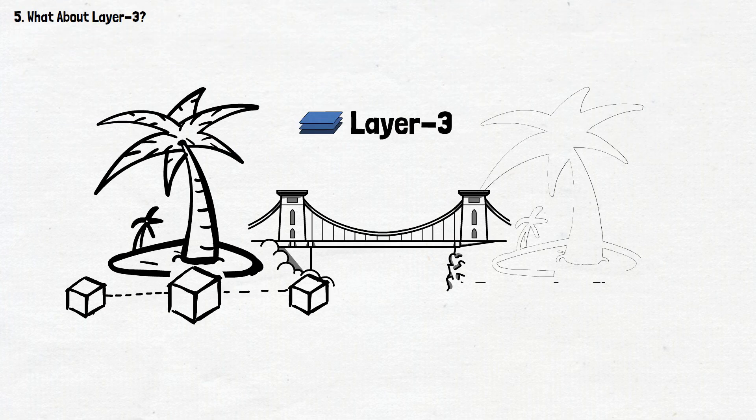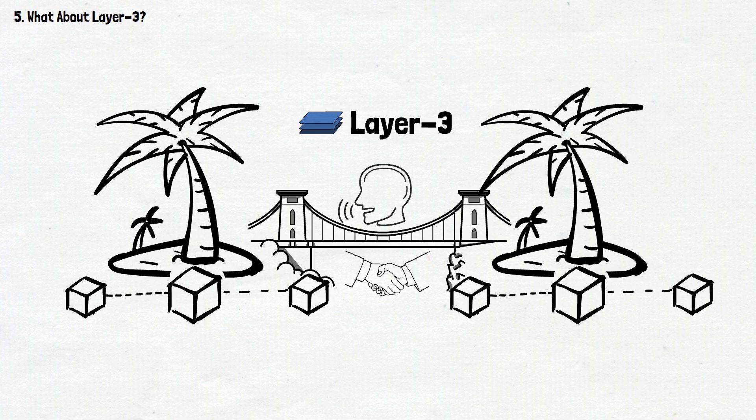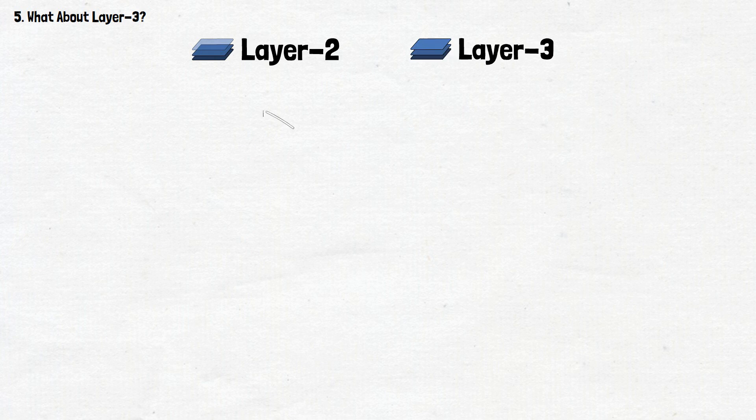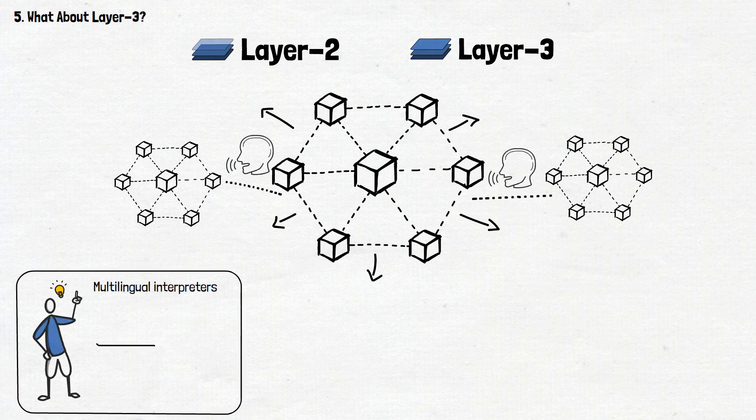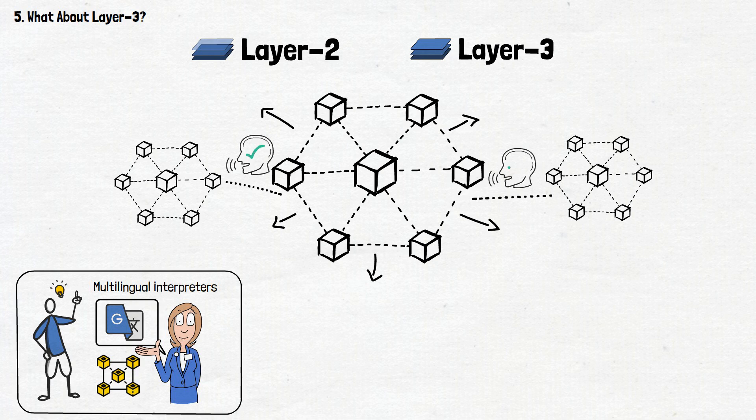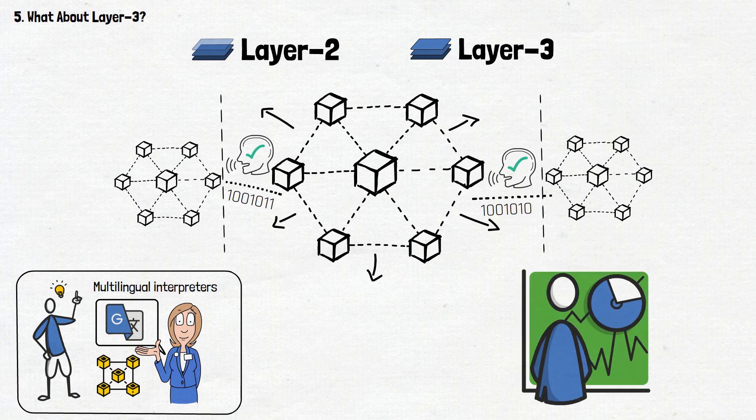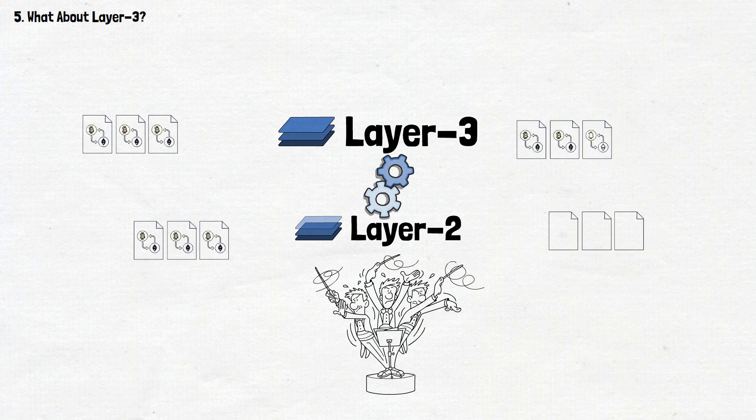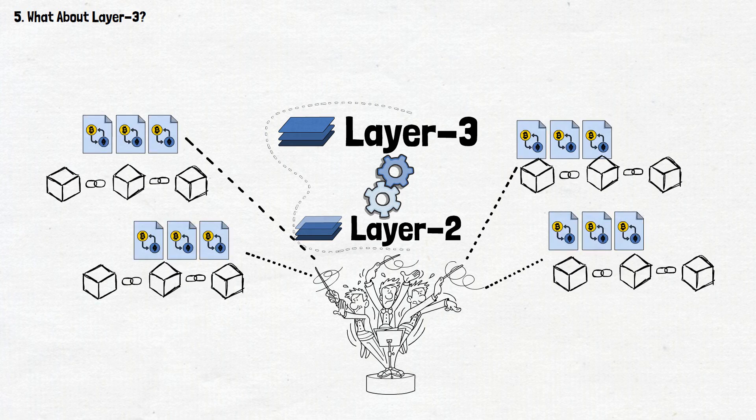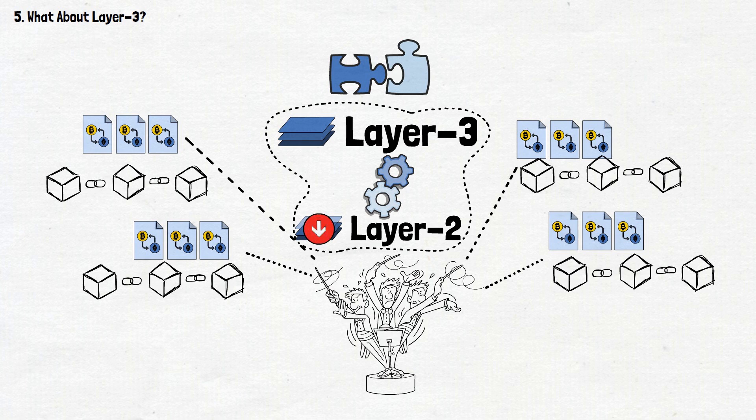Now, what about Layer 3? Picture Layer 3 as the bridge connecting different blockchain islands, allowing them to speak the same language and work harmoniously together. While both Layer 2 and Layer 3 aim to scale the blockchain network, Layer 3 takes the helm in interconnecting diverse blockchains and smoothing out their communication. Think of Layer 3 solutions as multilingual interpreters for blockchains. They facilitate seamless communication and data transfer between distinct blockchain networks, enhancing the overall user experience and fostering more interconnected crypto ecosystems. In other words, Layer 3 networks operate atop Layer 2 solutions, acting as the conductor orchestrating transactions across multiple blockchains. This connectivity is the missing puzzle piece that traditional Layer 2 solutions often lack.